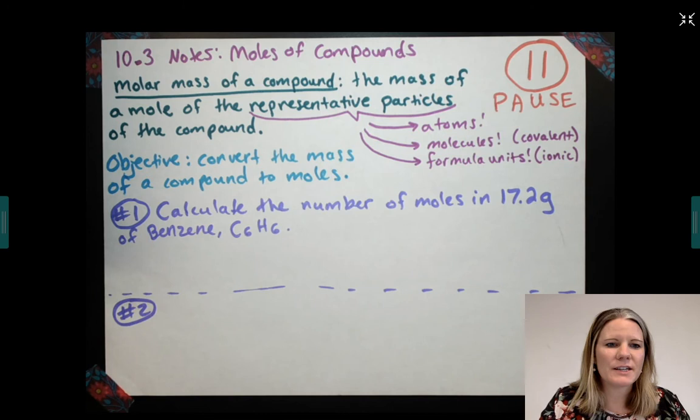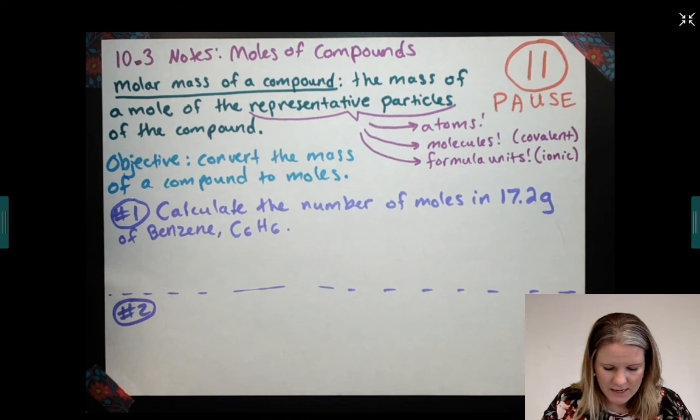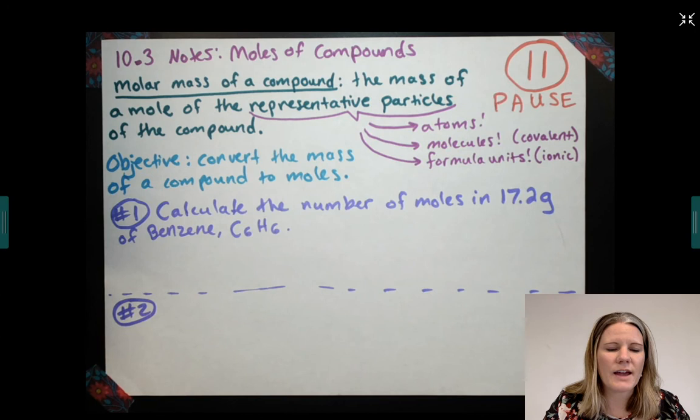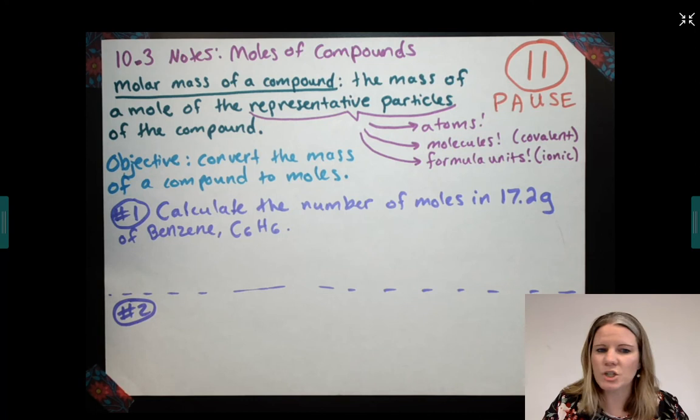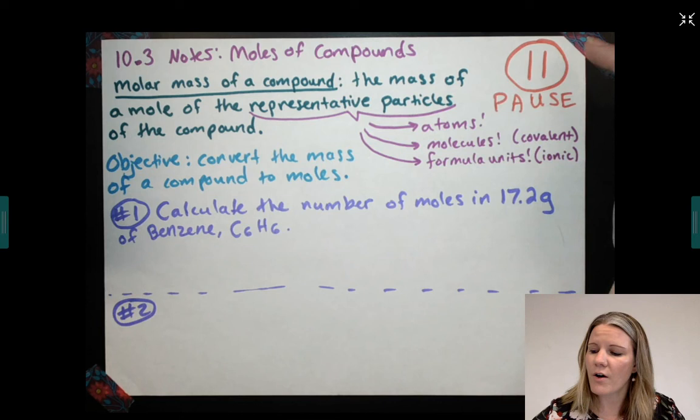Our objective with the problems that you'll see on your homework is to convert the mass of a compound to moles and vice versa as well. So copy this problem down if it's your second time through and give it a try. But our problem number one is calculate the number of moles in 17.2 grams of benzene, which is defined as C6H6, so six carbons and six hydrogens. Pause the video now if this is your second time through and try out this problem before you move on.